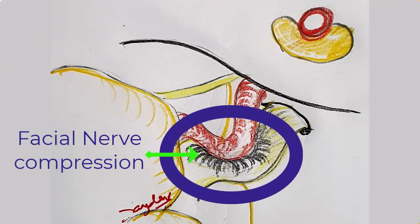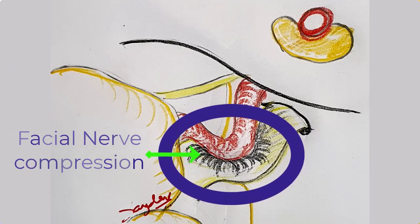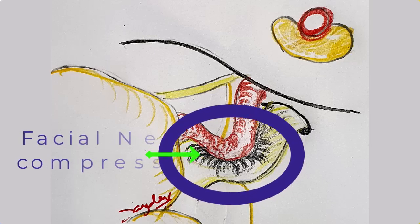This is the place typically where the nerve gets compressed, and this leads to hemifacial spasms. This compression affects the signals that pass along the facial nerve, and this leads to contraction in the muscles that this nerve supplies.